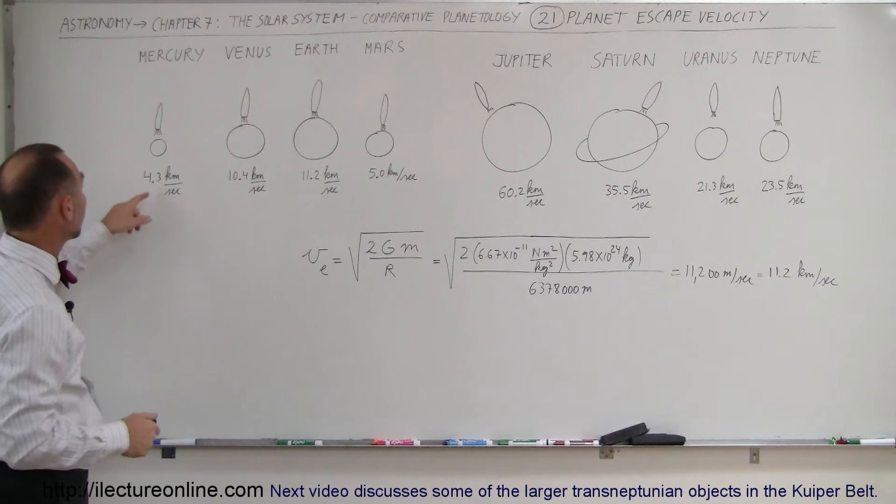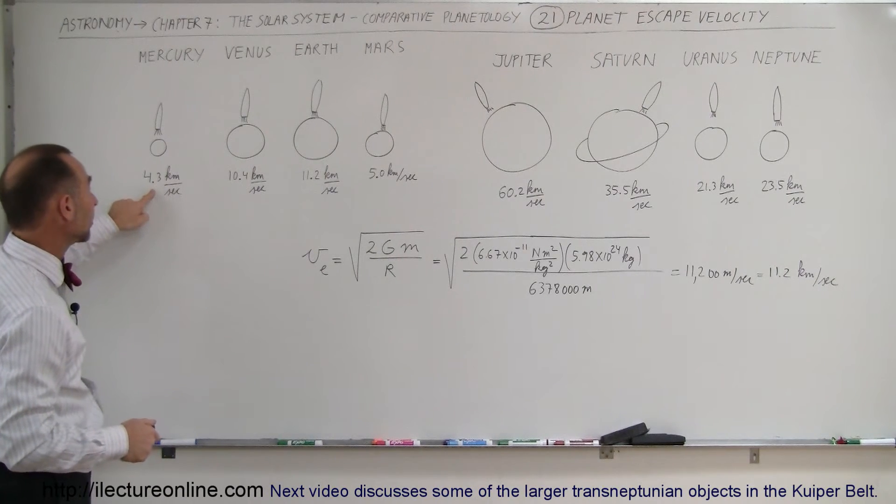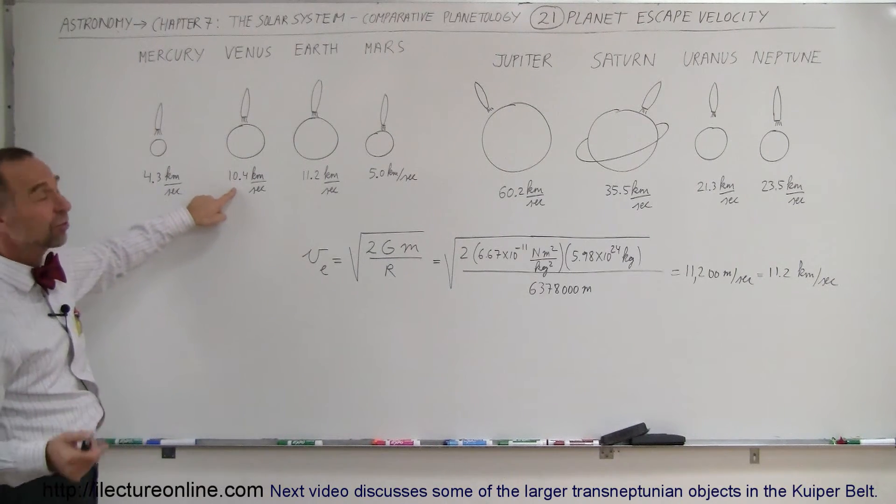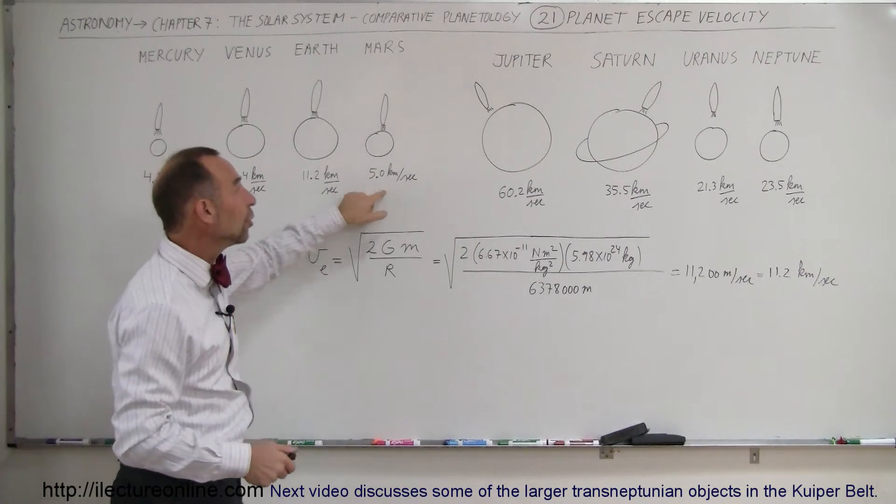For the rest of the planets, notice for Mercury, it's only 4.3 kilometers per second. For Venus, almost as big as the Earth, 10.4. For Mars, it's 5.0.